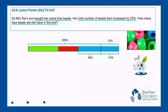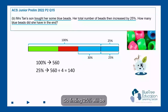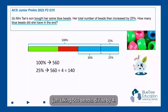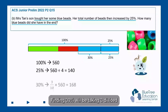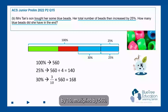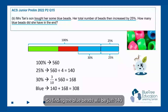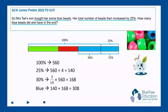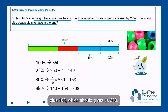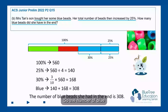From the 100%, we have 560 beads. Finding 25% is 560 divided by 4, which gives us 140 beads. Finding 30% is 3 divided by 10 multiplied by 560, which equals 168 beads. So the total blue beads is 140 plus 168, which gives us 308. The number of blue beads she had in the end is 308.